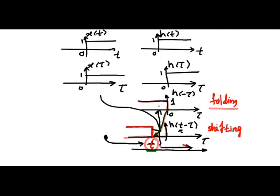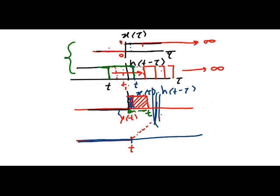H of T minus tau, we keep shifting till both the signals X of tau and H of T minus tau overlap. The overlap between X of tau and H of T minus tau begins at zero and goes up to interval T. So, this is the common area of overlap, which becomes the limit for the integration when we calculate the output of the system.